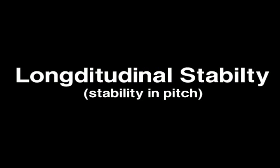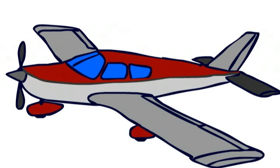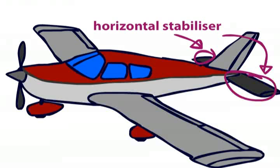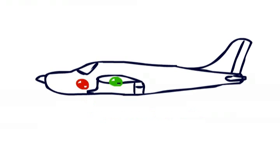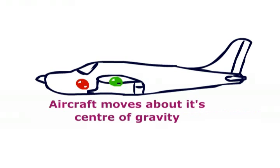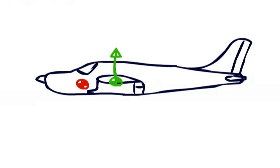Longitudinal stability, the stability of the aircraft in pitch, involves the horizontal stabilizer. In an aircraft, the center of gravity, the imaginary point where all weight acts, is in front of the center of pressure, the imaginary point where all lift acts.